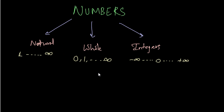Please note that these are not the only types of numbers. There are rational numbers, irrational numbers, imaginary numbers and various other sorts of numbers. But for the sake of this course, we are going to look at only these three types of numbers.